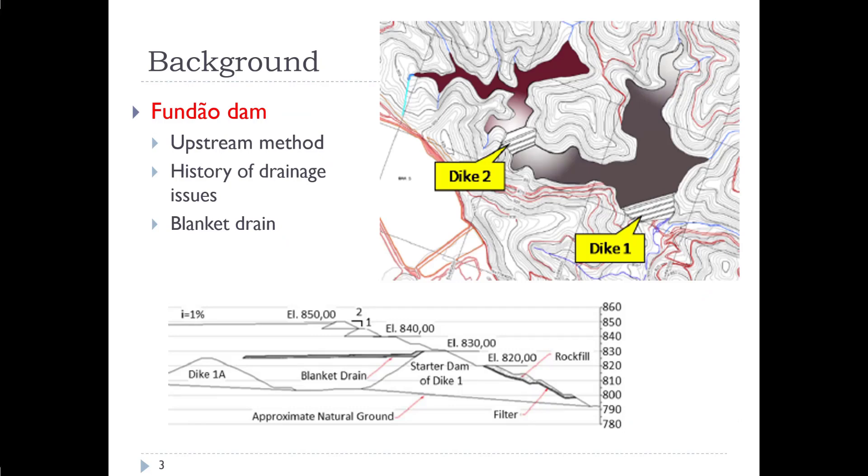Just a little bit of background on the Fundau Dam. It was constructed with the upstream method. There's a history of drainage issues if you read through the reports. A blanket drain was installed as part of the construction partway up through the material that can be seen in the cross-section figure here. So there's a starter dam, there's rock fill against the face, there's another dike installed upstream, dike 1A, and then we have tailings in the middle and blanket drains, and then upstream construction at the site.